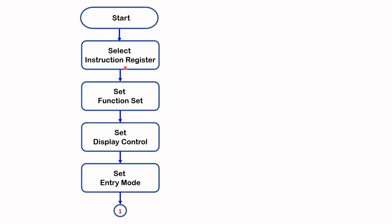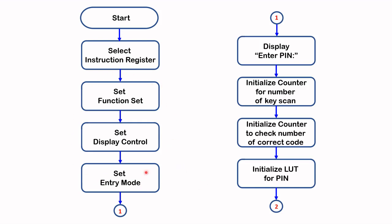Let's look at the flowchart. We start by selecting the instruction register, which allows us to set the instruction codes. The first instruction is the Function Set, which takes the LCD into 4-bit mode. Then we set the Display Control, which turns on the display and the cursor. Then we set the Entry Mode, which shifts the cursor to the right. When all those codes are set, we display the message 'Enter PIN'.